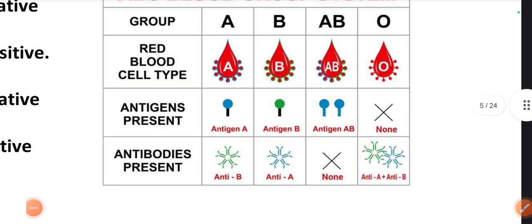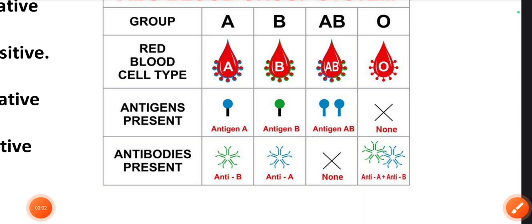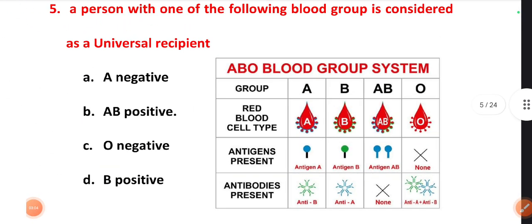In the picture you can see antibodies are not present in the AB group. In the case of O, the antigens are not present. So in the O group there are no antigens, and in AB there are no antibodies. That's why the O group is called the universal donor and AB is called the universal recipient.